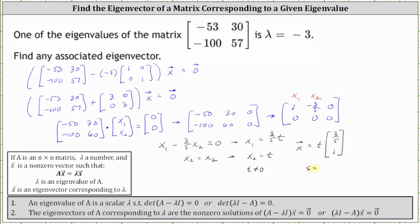Again, as long as s doesn't equal zero, which would give us the vectors in the form of s times the vector three, five.